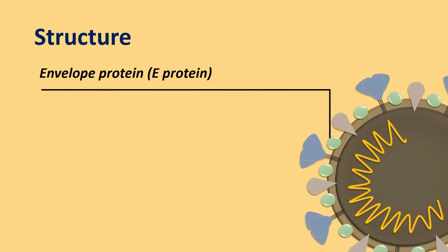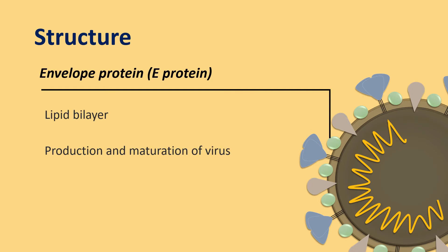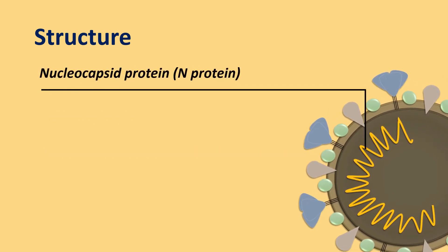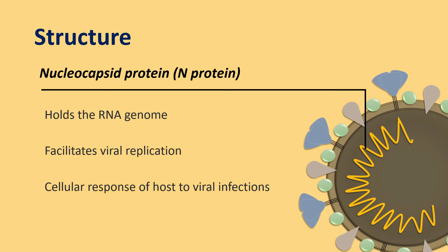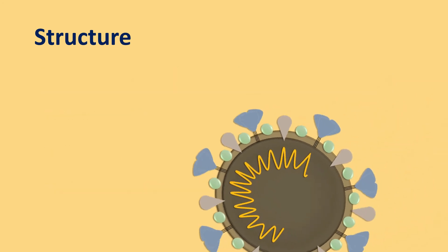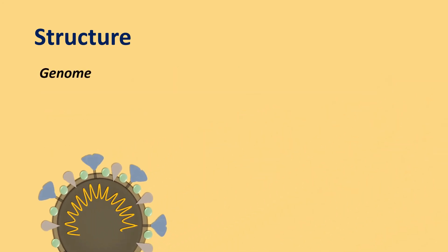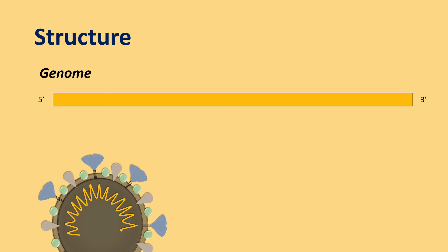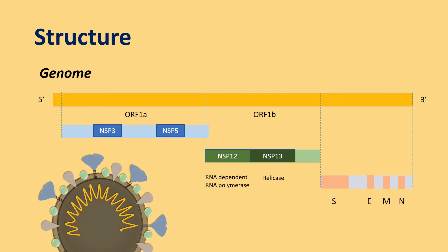The envelope protein, or E protein, is found amidst the lipid bilayer and helps in production and maturation of the virus. The nucleocapsid protein, or N protein, holds the RNA genome together. It facilitates viral replication and also plays a key role in the cellular response of the host to viral infection. The genomic material of SARS-CoV-2 comprises a single-stranded RNA which codes for several structural and non-structural proteins.